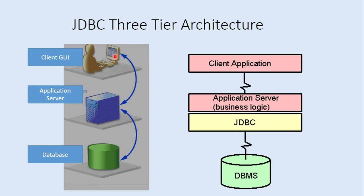The JDBC API supports both a two-tier process model and a three-tier process model for data access. From the block diagram perspective, the client application is your browser or servlet, and the Java application resides on the application server. The application server then communicates to the database through the JDBC driver.